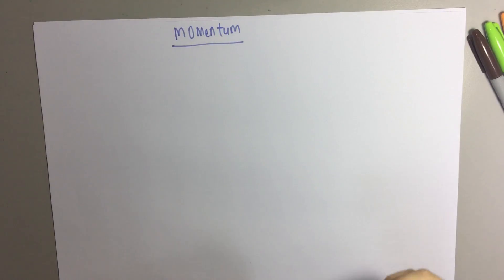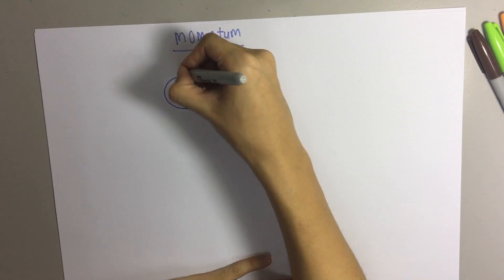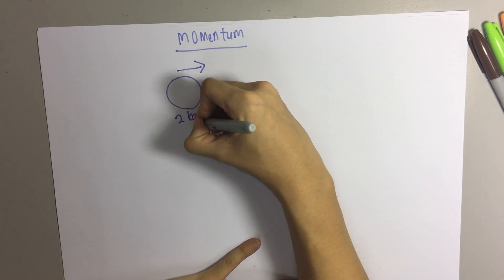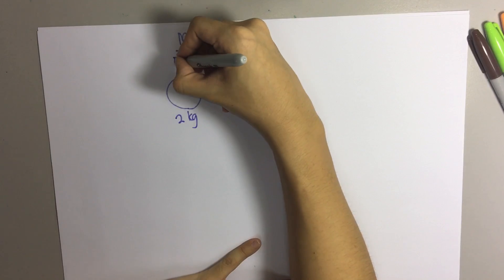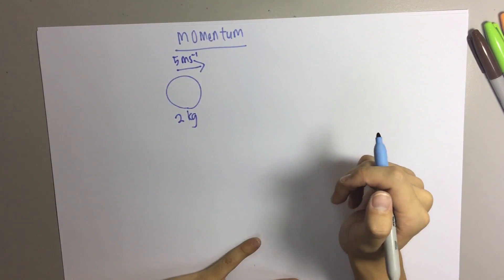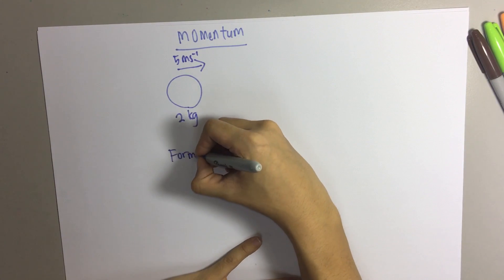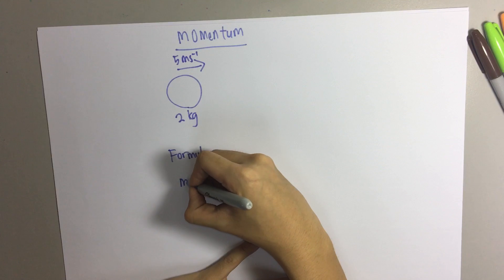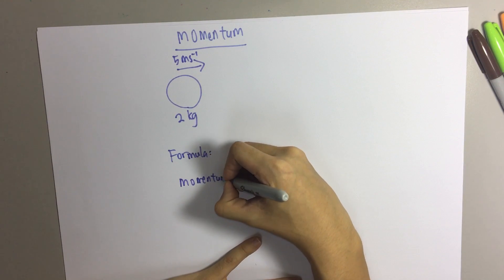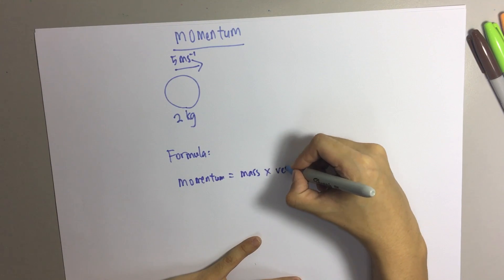So what is momentum? Momentum is when an object is moving at a constant speed. Let's say the object is about 2 kg and then the speed is 5 m per second, so this object has momentum. For momentum, it has a formula which is: momentum equals to mass times velocity.